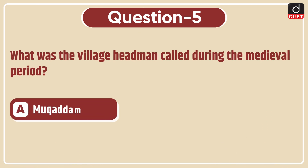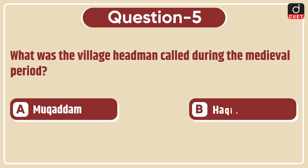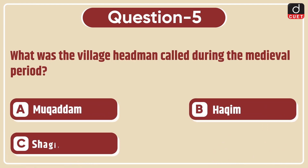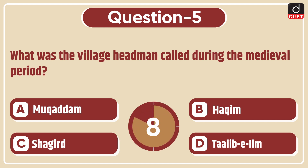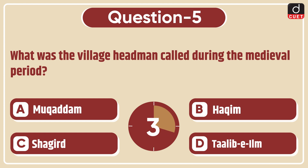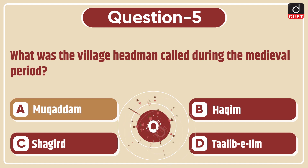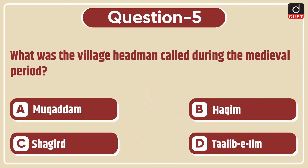Next question: what was the village headman called during the medieval period? Mukaddam, Hakim, Shagird, or Talib-e-al? The correct answer is option A, Mukaddam.